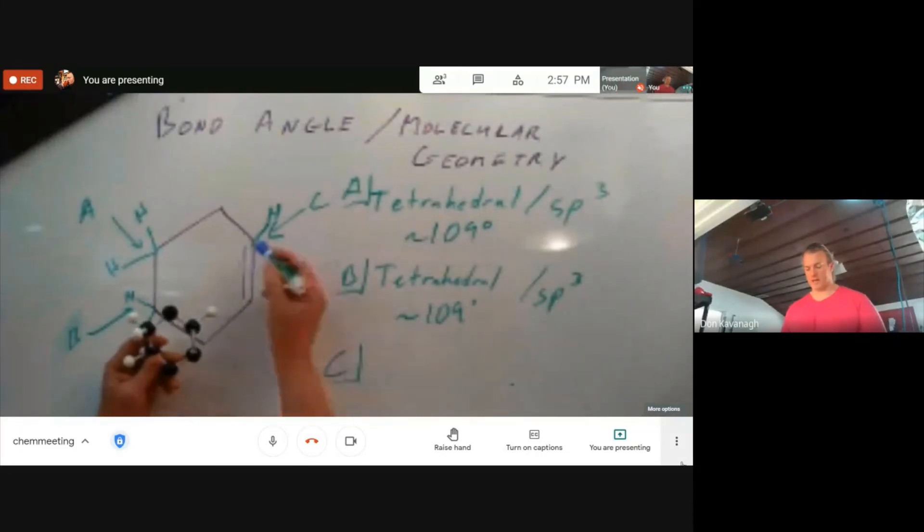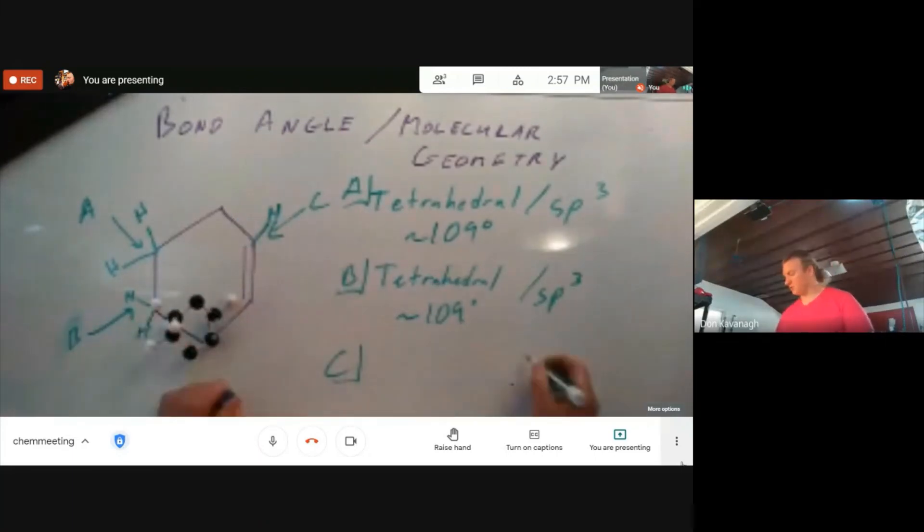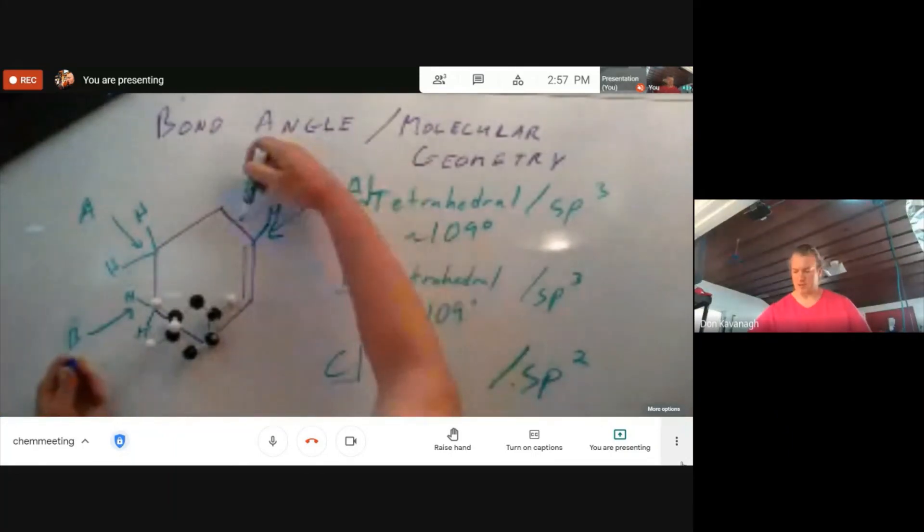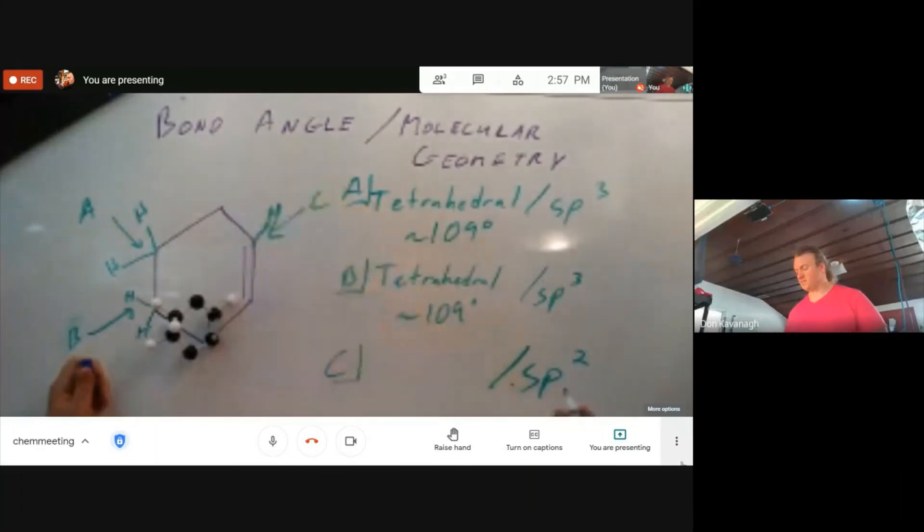It is s, sp1, sp2. So this is an sp2 hybridized carbon. I counted the sigma bonds. Let me count that again: s, sp1, sp2. sp2 hybridized carbon is trigonal planar.